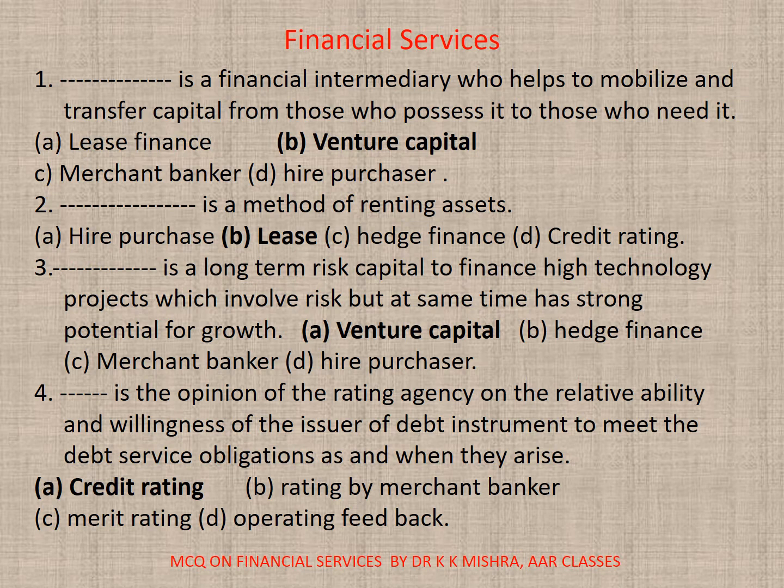Question 4. This is the opinion of the rating agency on the relative ability and willingness of the issuer of a debt instrument to meet the debt service obligations as and when they arise. A. Credit rating. B. Rating by merchant banker. C. Merit rating. D. Operating feedback. Correct option is A. Credit rating.